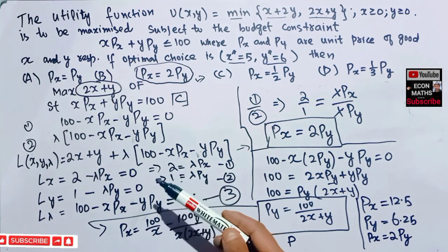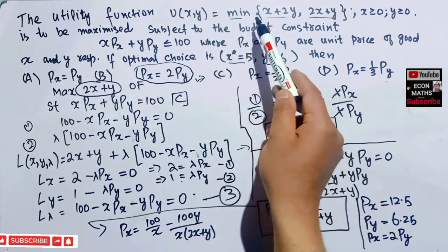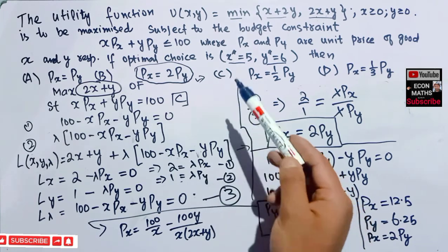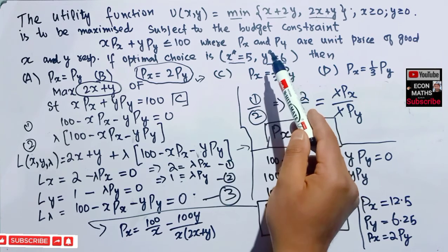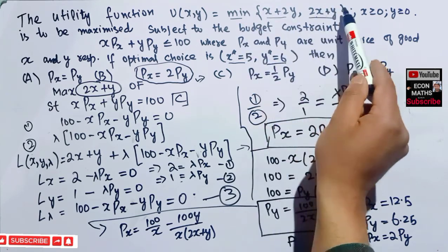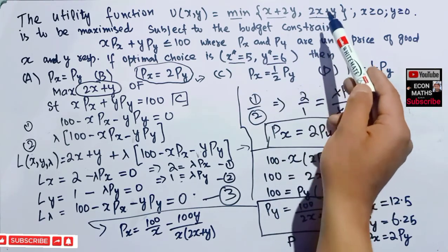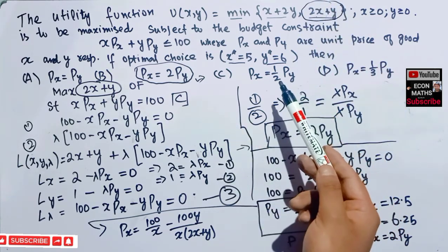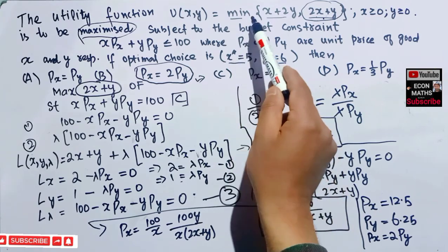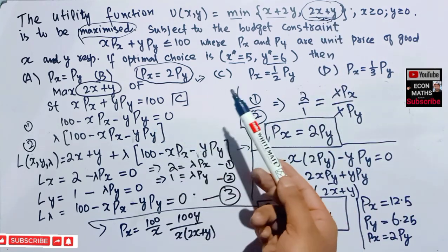To summarize: we were given two utility functions and had to find the minimum of the two expressions, then maximize that minimum. We plugged in x=5, y=6 to find which expression is minimum — it was 2x+y, giving value 16. We then maximized 2x+y subject to the budget constraint using the Lagrange multiplier method, arriving at the result that px = 2·py.